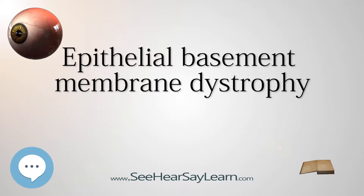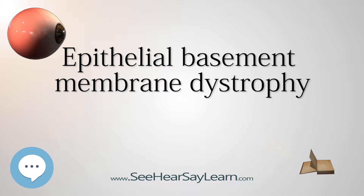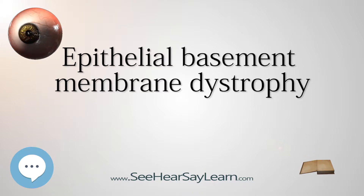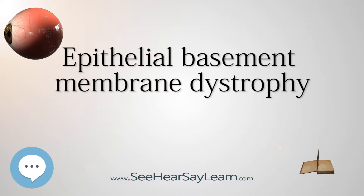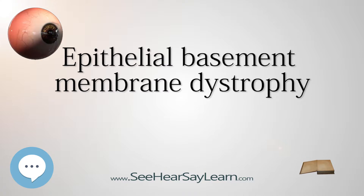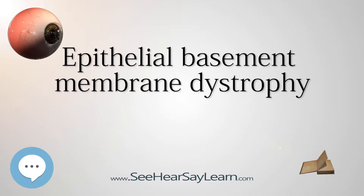It also has a fluctuating course, while for a typical corneal dystrophy the course is progressive. When it is considered part of this group, it is the most common type of corneal dystrophy.